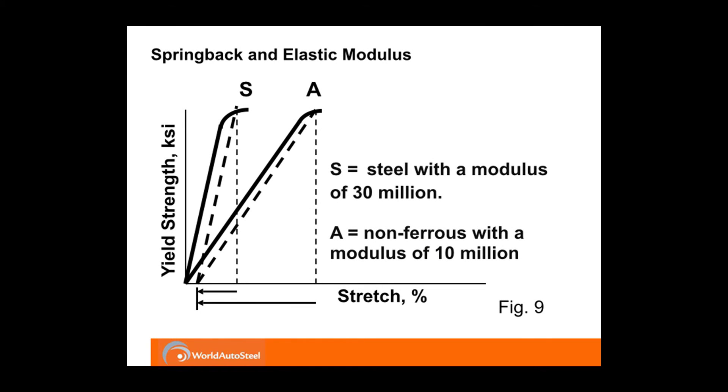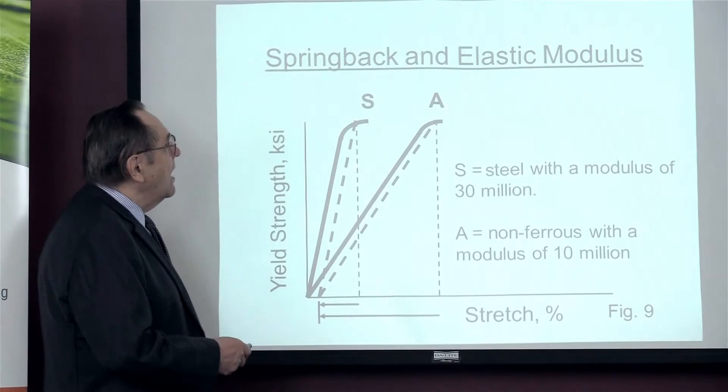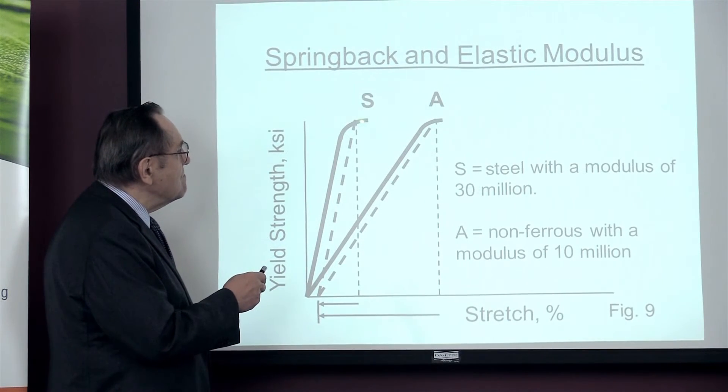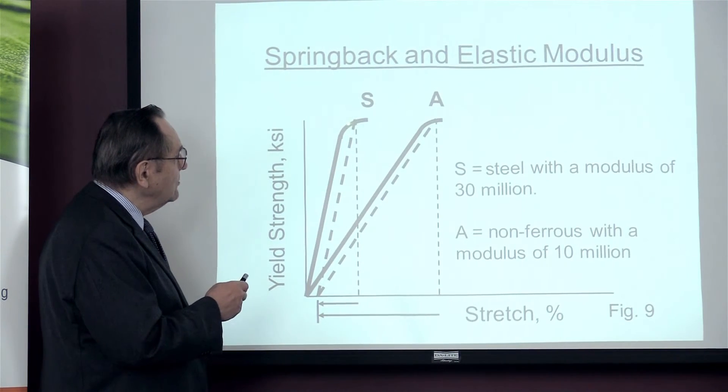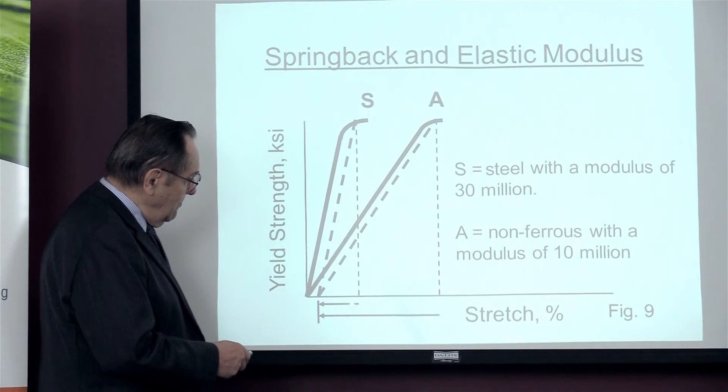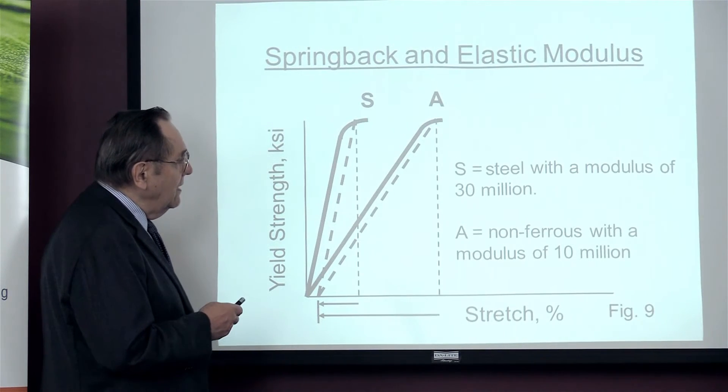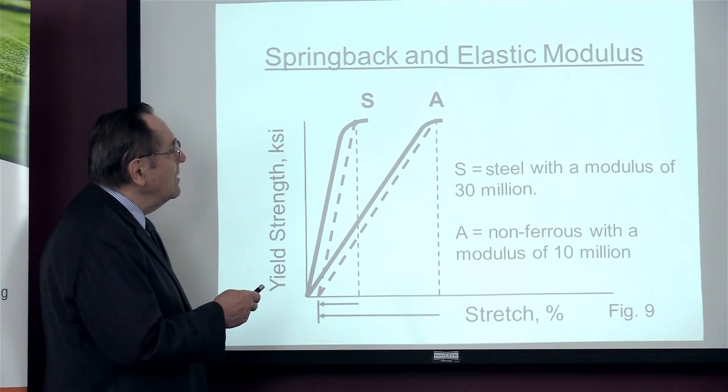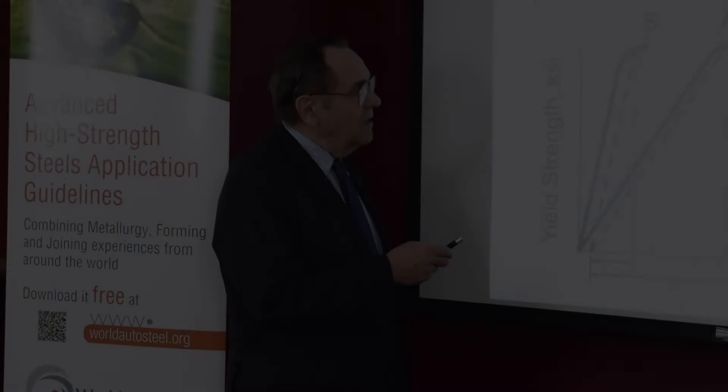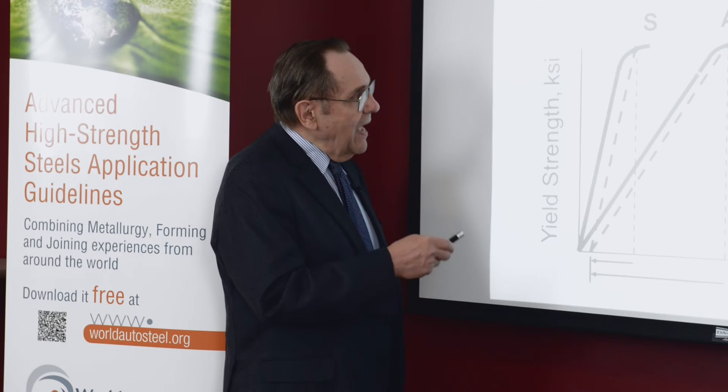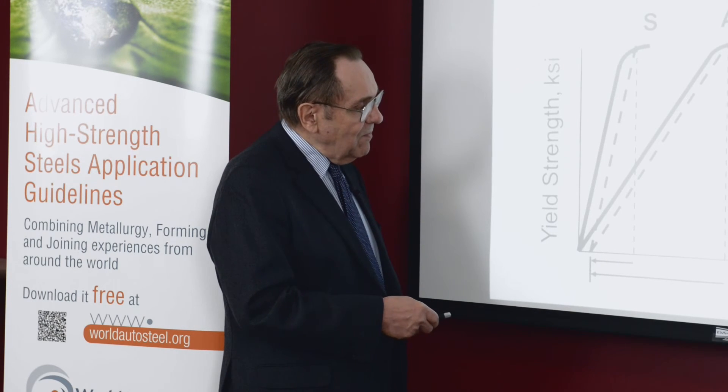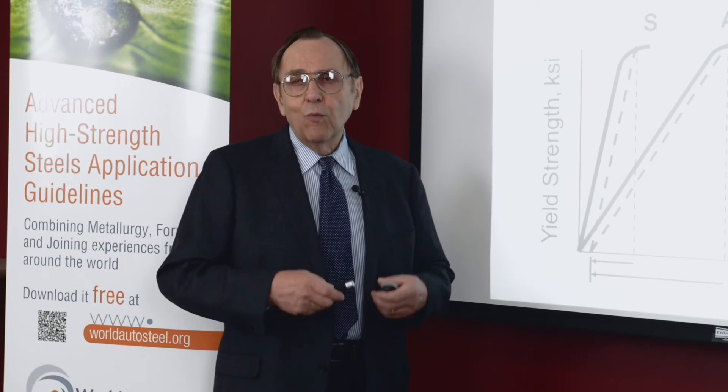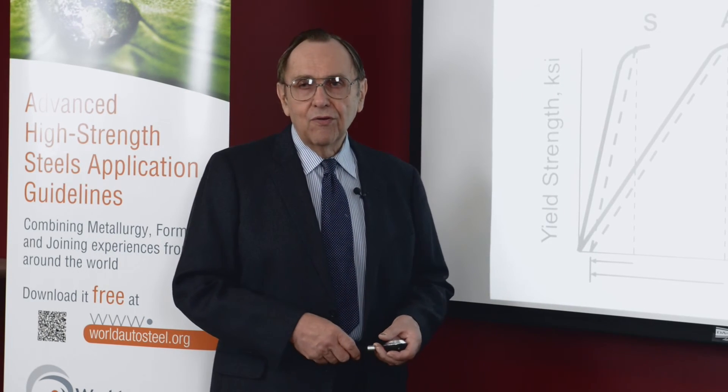Well, it even depends upon the modulus of elasticity. For steel, we have a 30 million modulus. And we have this amount of springback. For an aluminum or a non-ferrous model, which is one-third of the modulus at 10 million, has now three times the amount of springback. And so the springback depends even on what material you are going to use.